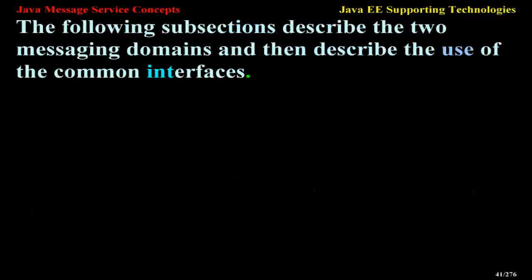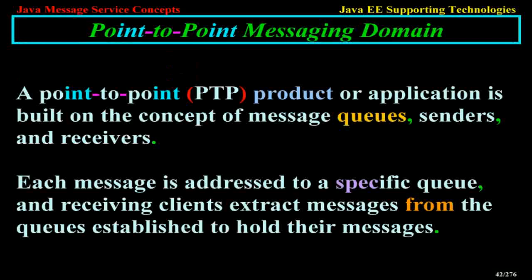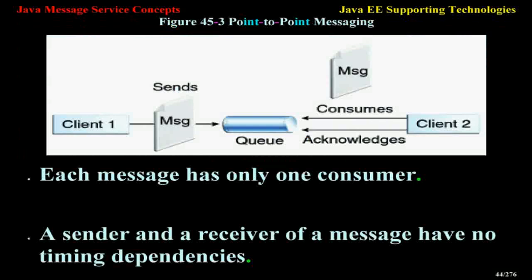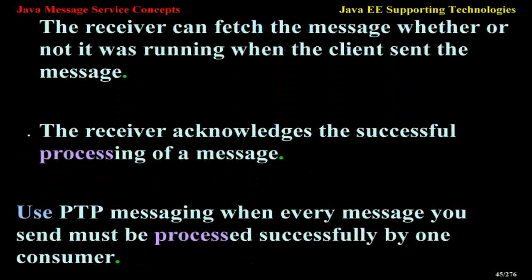Point-to-Point Messaging Domain. A point-to-point (PTP) product or application is built on the concept of message queues, senders, and receivers. Each message is addressed to a specific queue, and receiving clients extract messages from the queues established to hold their messages. Queues retain all messages sent to them until the messages are consumed or until they expire. PTP messaging characteristics: each message has only one consumer; a sender and a receiver have no timing dependencies; the receiver can fetch the message whether or not it was running when the client sent it; and the receiver acknowledges the successful processing of a message. Use PTP messaging when every message you send must be processed successfully by one consumer.